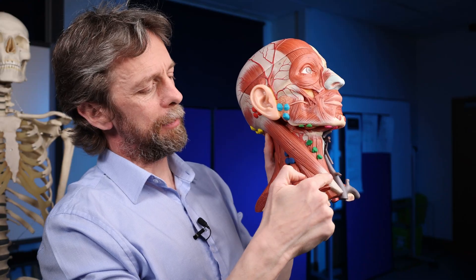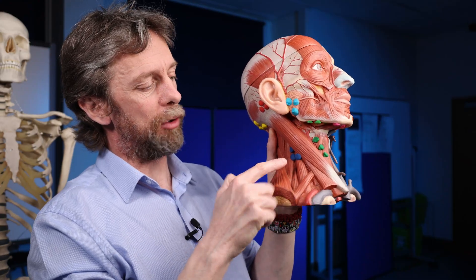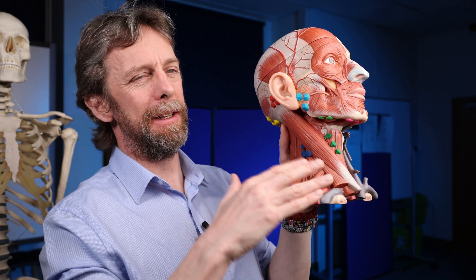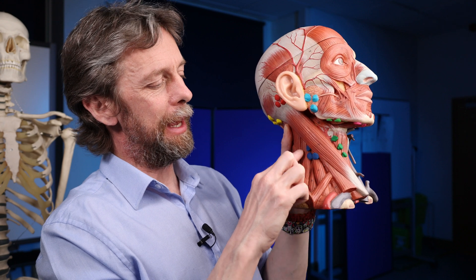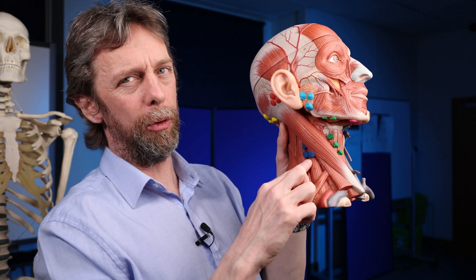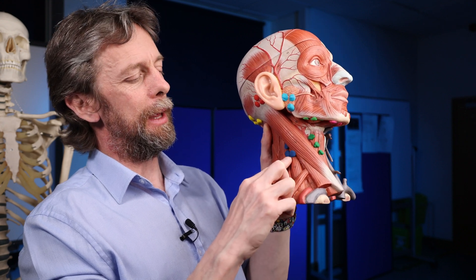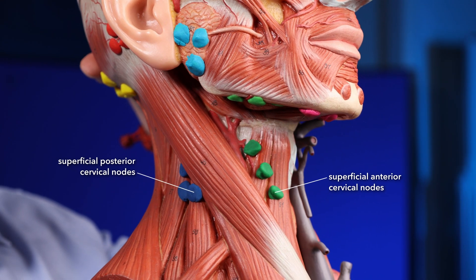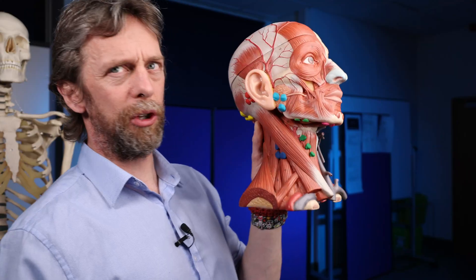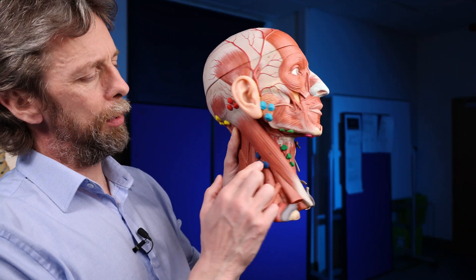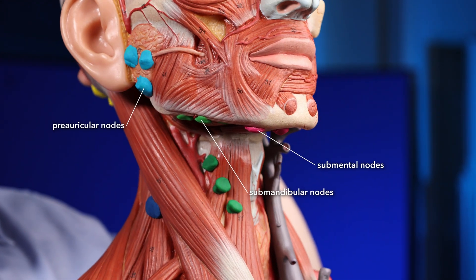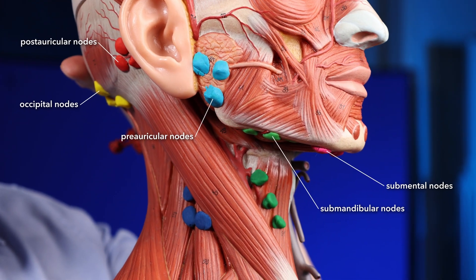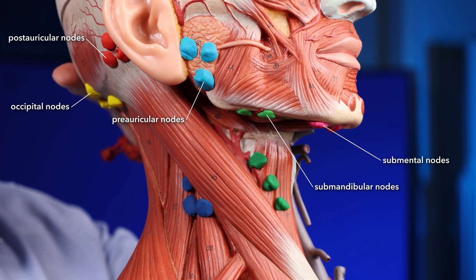So the sternocleidomastoid — this is the posterior triangle of the neck — these would be the superficial, or the location of the superficial posterior cervical lymph nodes. And these would be the anterior superficial cervical lymph nodes. So think superficial, pretty close to the skin, following the veins. So those are the superficial lymph nodes of the neck, and remember they're draining down to that venous angle there.